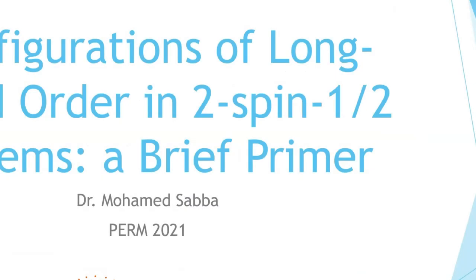I'm going to do something interesting, which is talking about the different configurations of long-lived order that you can get in two-spin-half systems. I'm going to go over some of the theory of that and also show some very nice experimental results.